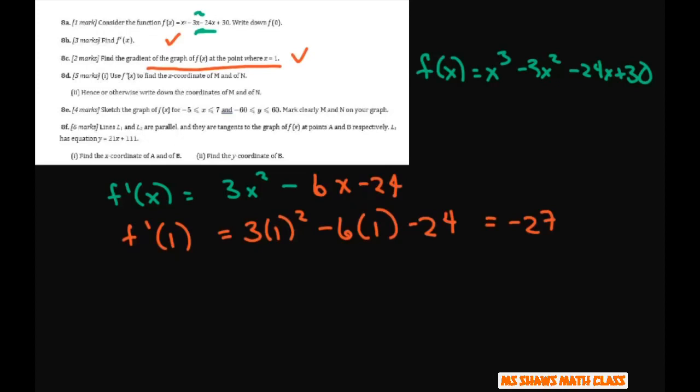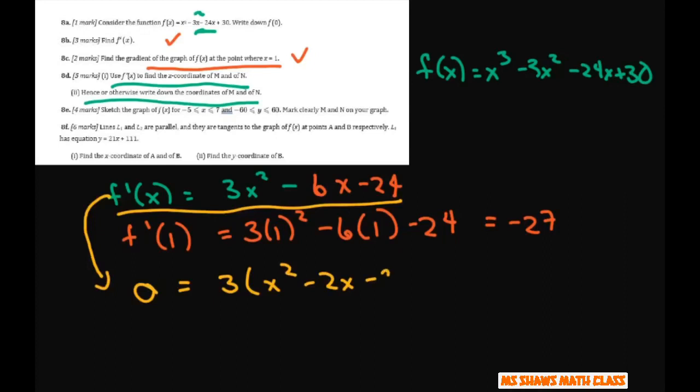And then what does it say? Use our derivative to find the x coordinate of m and n. Hence or otherwise, write down the coordinates of m and n. Basically what they want you to do is factor this. So when you factor it, you're going to set it to 0. Let this be 0. And you can factor out a 3 here. That gives you x squared minus 2x minus 8,